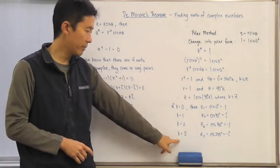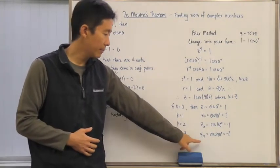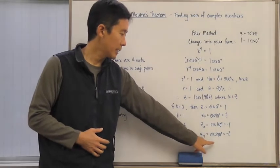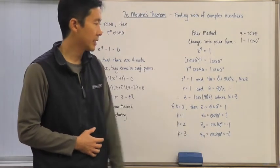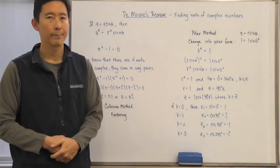Now, one question is, why didn't we take k equals 4? Well, the reason k equals 4 is not being considered is because then this would give us the cis of 360 degrees, which is exactly the same thing as k equals zero.